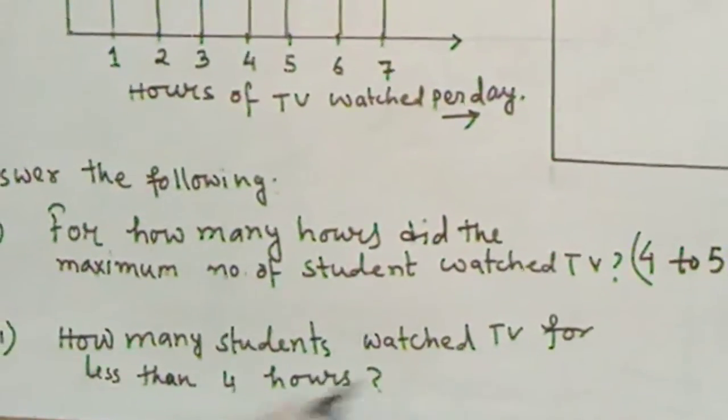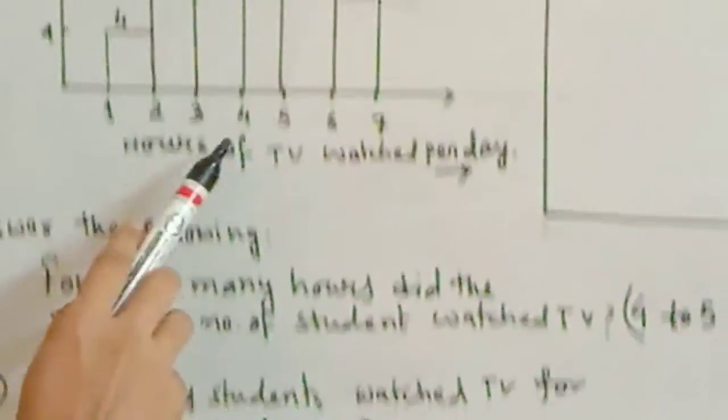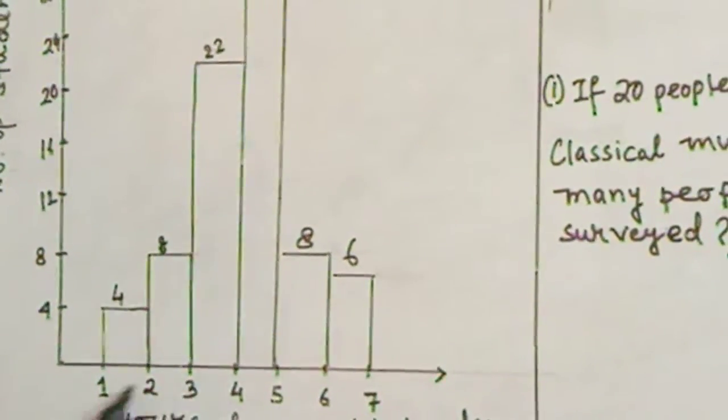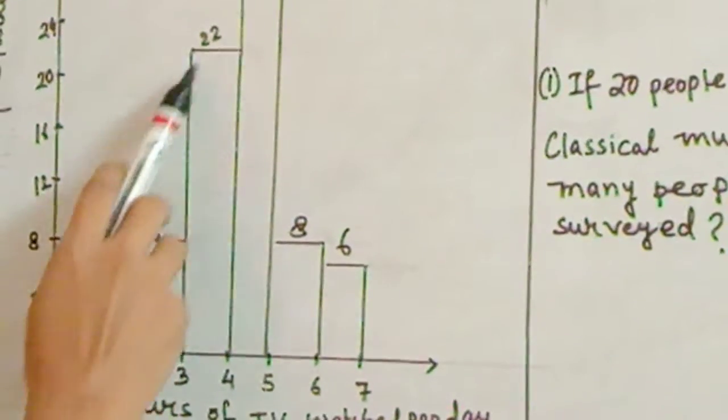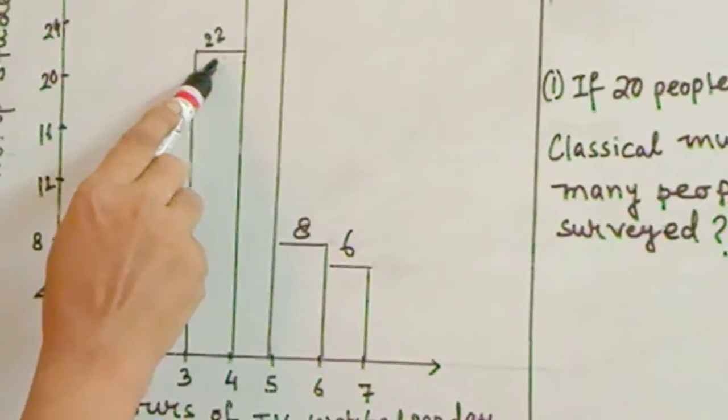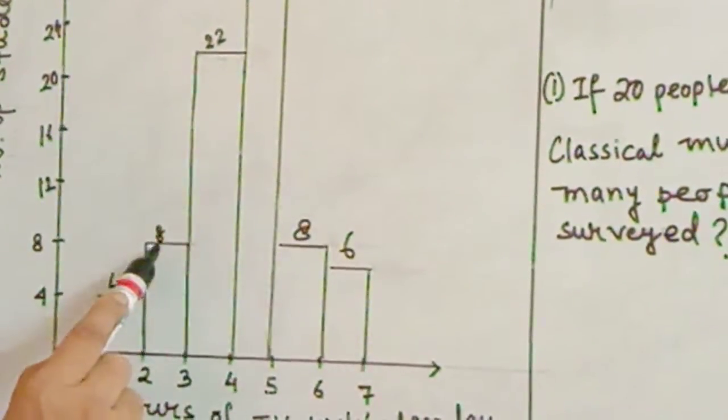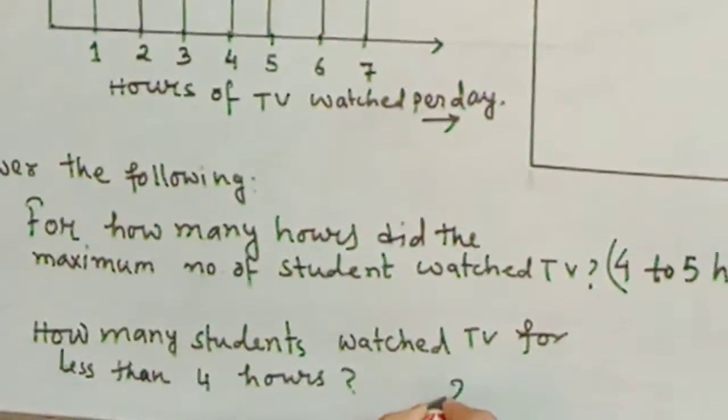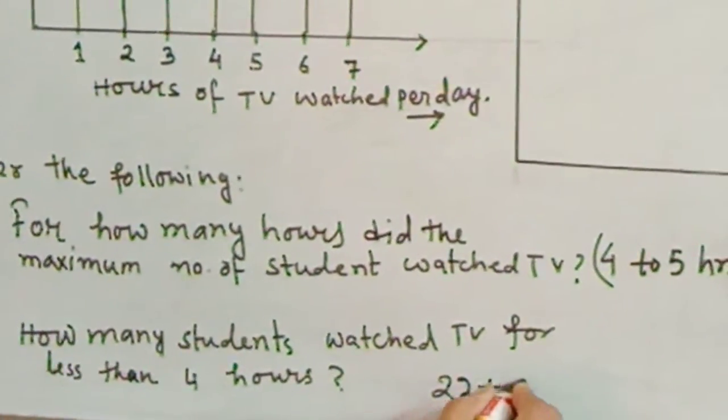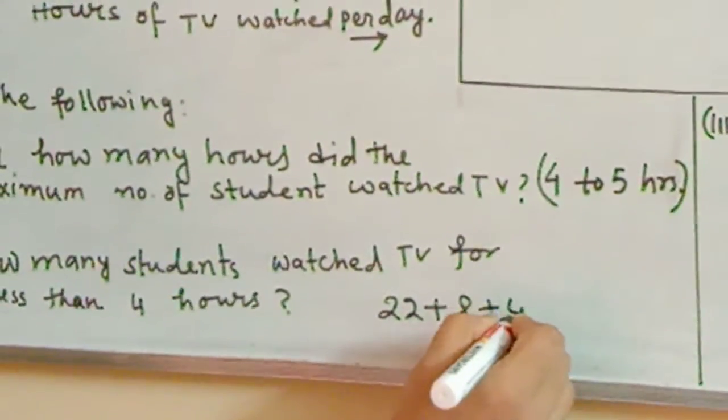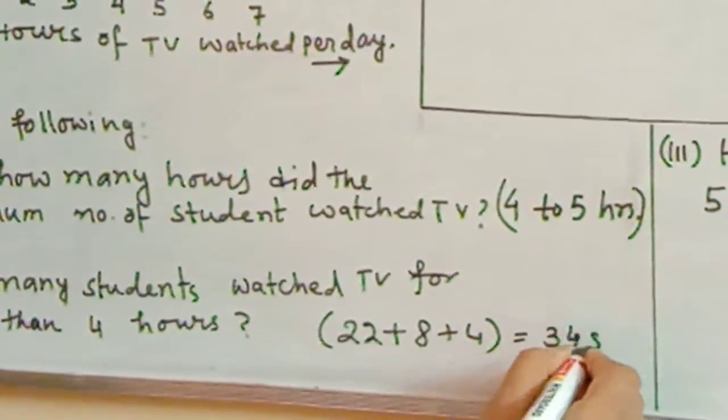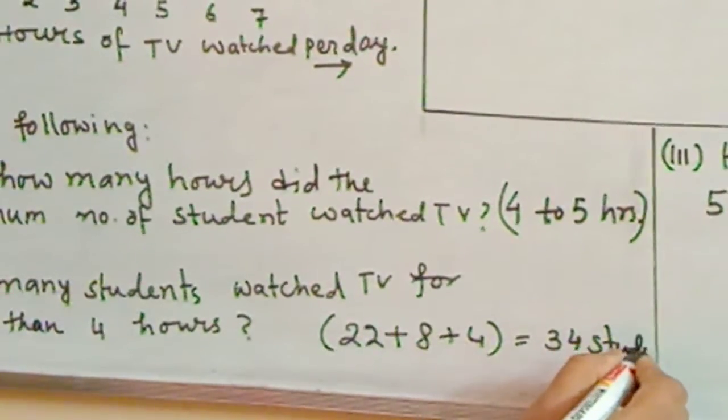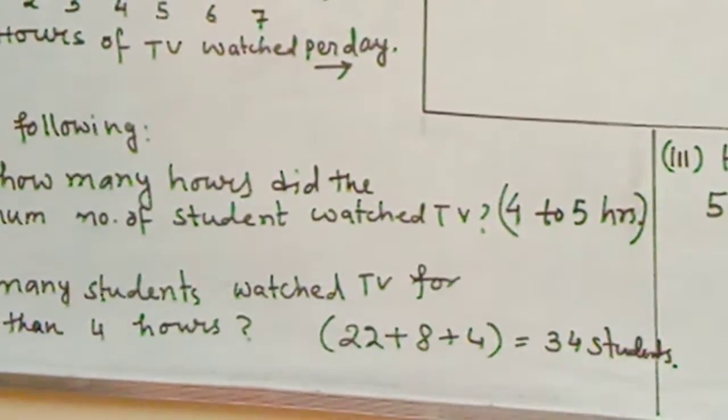How many students watched TV for less than 4 hours? Less than 4 hours means you have to observe this histogram's height: 22, 8, and 4. So 22, 8, and 4 equals 34 students.